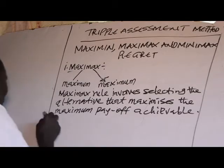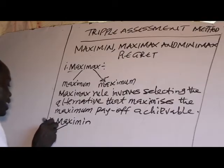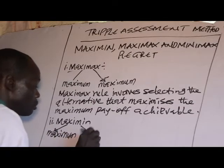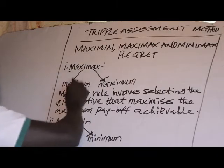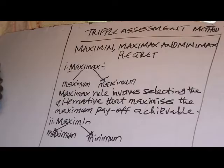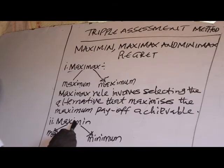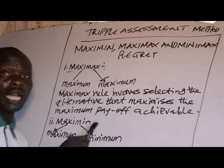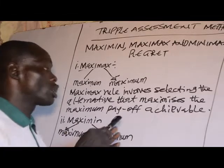Number two is the Maximin rule. The first 'Maxi' means maximum, and 'min' refers to minimum. So in the Maximin rule, you choose the maximum of the minimum. This rule involves selecting the alternative that maximizes the minimum payoff achievable. That is, when you choose the alternative that maximizes the minimum payoff, that rule is called the Maximin rule.